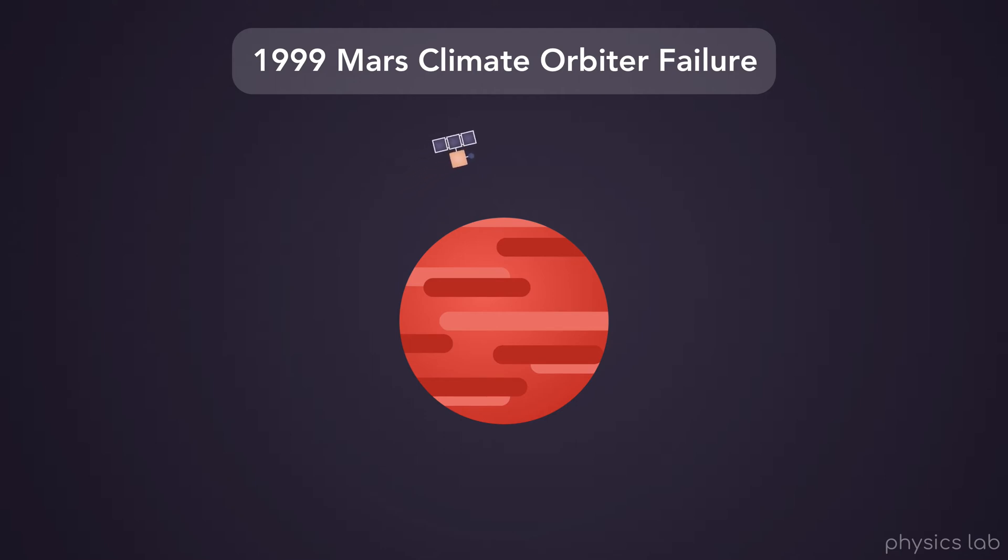The probe was supposed to orbit Mars high above its atmosphere and study the planet. But on September 23, 1999, NASA lost communications with the probe. What they discovered was that the trajectory of the space probe had been wrong. It got much closer to the surface of Mars than they wanted, and the probe probably burned up in the atmosphere.